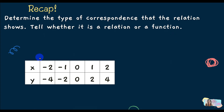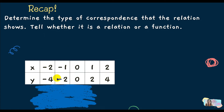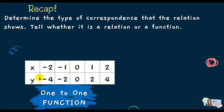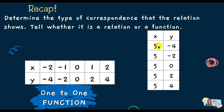Next, we have a table form. The x values are negative 2, negative 1, 0, 1, 2 — no repeats. So the correspondence is one-to-one, and this is a function. On the other hand, another table has x values that are all 5, repeating. So right away, since x repeats, this is not a function — it is a relation only, with one-to-many correspondence.